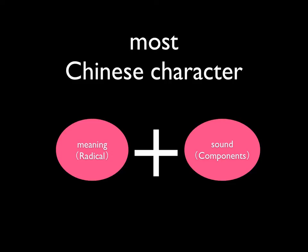Let's have a look at an example. 媽 — the character for mother. We can see the character on the left is 女, which means female. The character on the right is 馬, which means horse. So obviously, you can see which part represents the meaning and which part represents the sound. 女 represents the meaning — that's why 女 is the radical for this character. And 馬 is very close to the 媽 sound — that's why 馬 is the sound component.